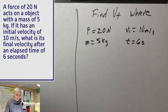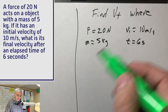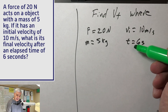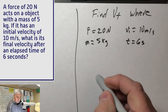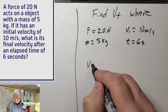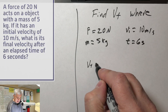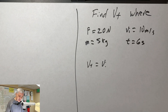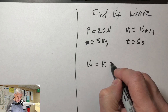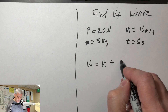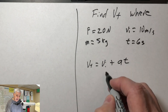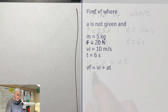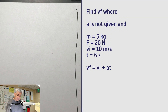The first thing we're going to do — we're looking for v sub f and we've got time and v sub i. So we know we're going to have to use the v sub f equation: the final velocity is how fast it was going to start with, plus the rate of acceleration times how long. So v sub f equals v sub i plus a times t.